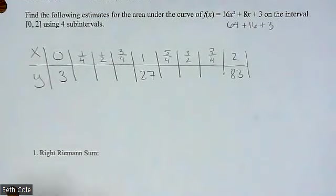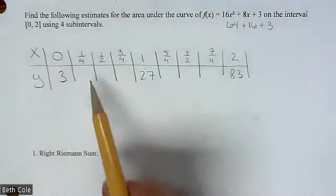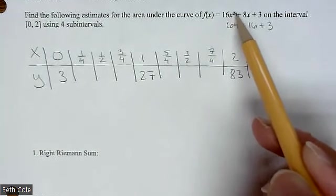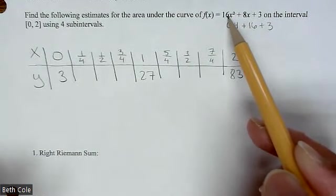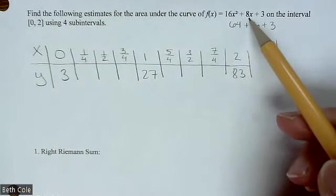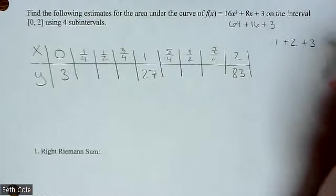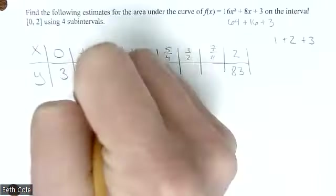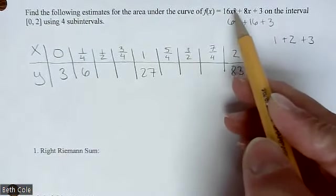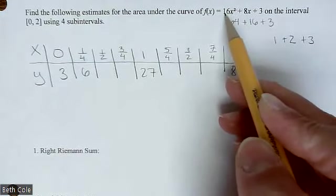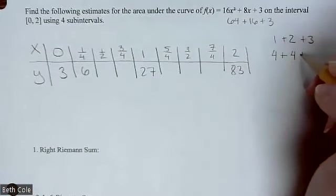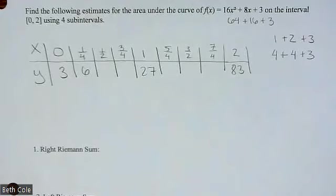All right. Now let's go back and get the ones in between. If you plug in a fourth, a fourth squared is 1/16 times 16 would be one. A fourth times eight, a fourth of eight is two and then plus, they're all going to have a plus three at the end. So that's, what is that, six? All right, let's plug in a half. A half squared is a fourth. A fourth of 16 is four plus half of eight is four. And then again, they're all going to have plus three at the end. So what is that, 11?